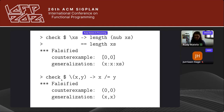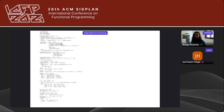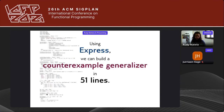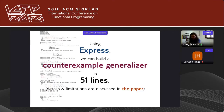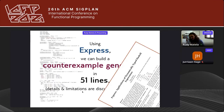With that function, we can write counterexample_and_generalizations, which tests the property with a property-based testing tool, then generalizes the counterexample by taking all candidate generalizations and selecting those that always falsify the property for a configured maximum number of test values. This produces x:x:xs as the generalization. Here's another example: checking the property that for any pair (x, y), x /= y. We get that (0, 0) is a counterexample, and that the property fails for any pair of the form (x, x). The full counterexample generalizer is 51 lines using Express.